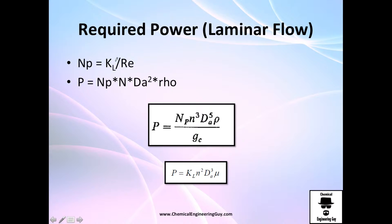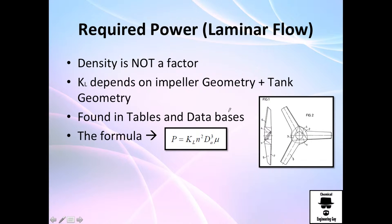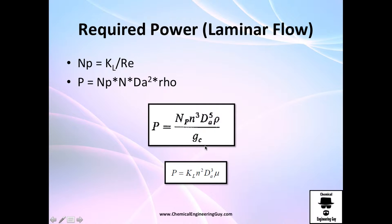The power number is essentially similar to a Reynolds number. You've got velocity, diameter, and viscosity. Density is not a factor, so it's okay not to have it here. This is the inverse of the Reynolds number.